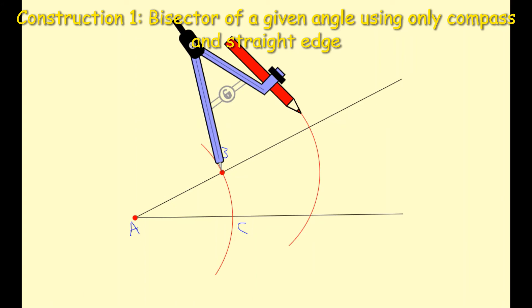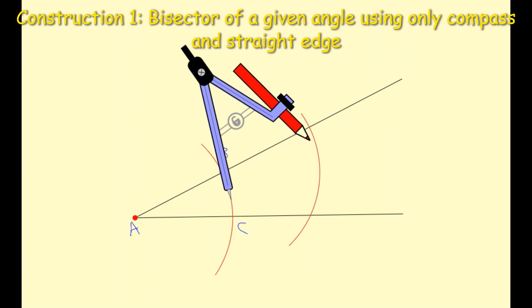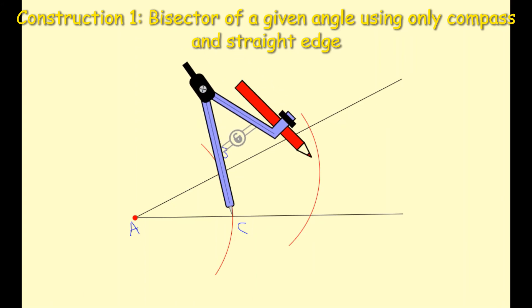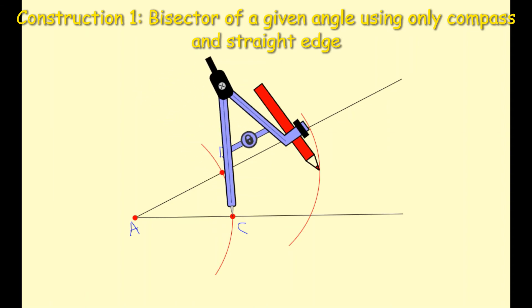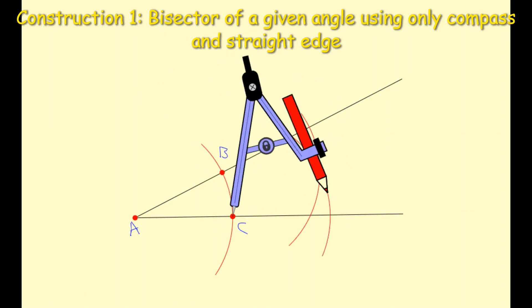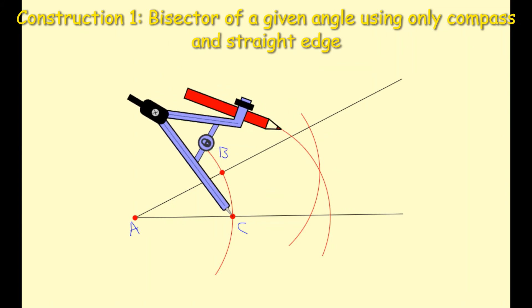I then take the nib of my compass and move it down to C, and I'm going to do the exact same thing. I'm going to create that arc going through both line segments. You should see that now these two arcs are going to intersect each other. I'm going to label that intersection point D. So I'm just putting a little dot there, and they're intersecting at point D.